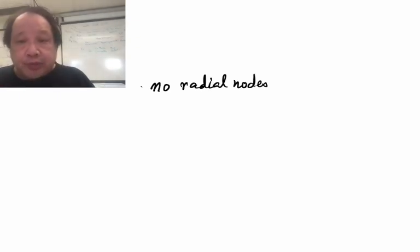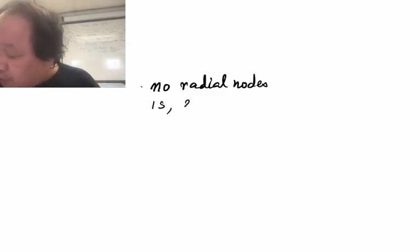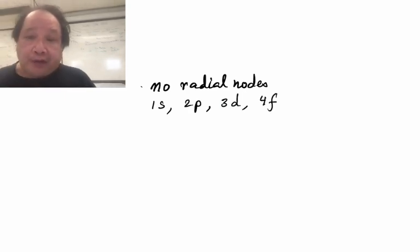Let's start off with some d-functions. Let's look at d-functions which have no radial nodes. So atomic orbitals with no radial nodes include 1s, 2p, 3d, and 4f.